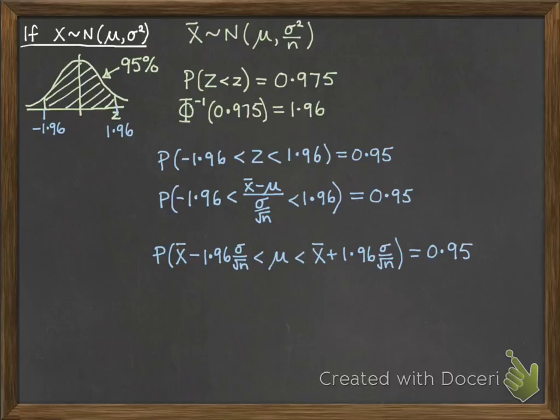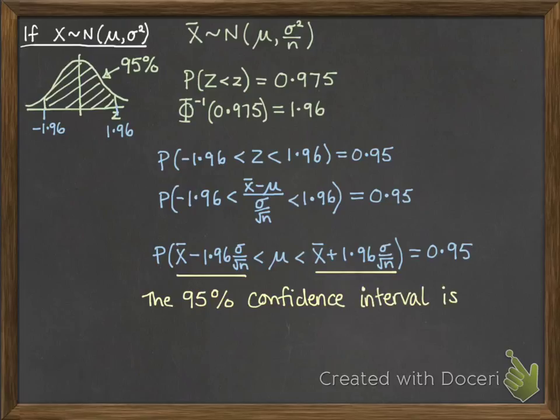Now the probability that μ lies between those two values is 95%. So we can say that our 95% confidence interval for this data looks like this.